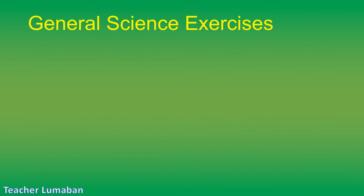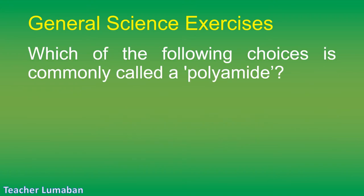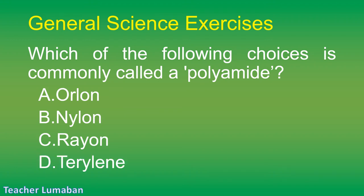Which of the following is commonly called a polyamide? Letter A: Orlon. Letter B: Nylon. Letter C: Rayon. Letter D: Terrylene.